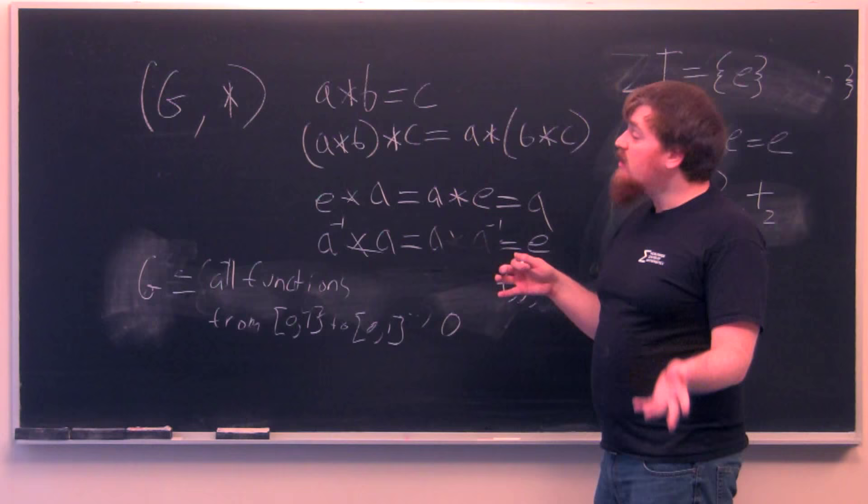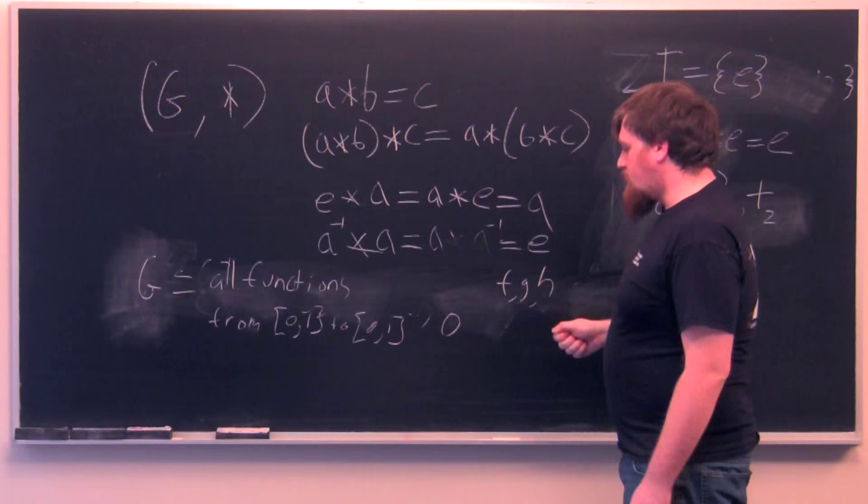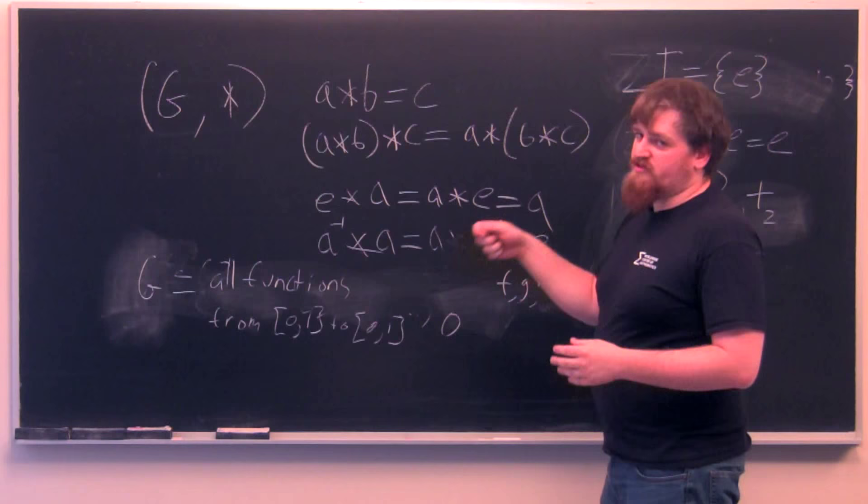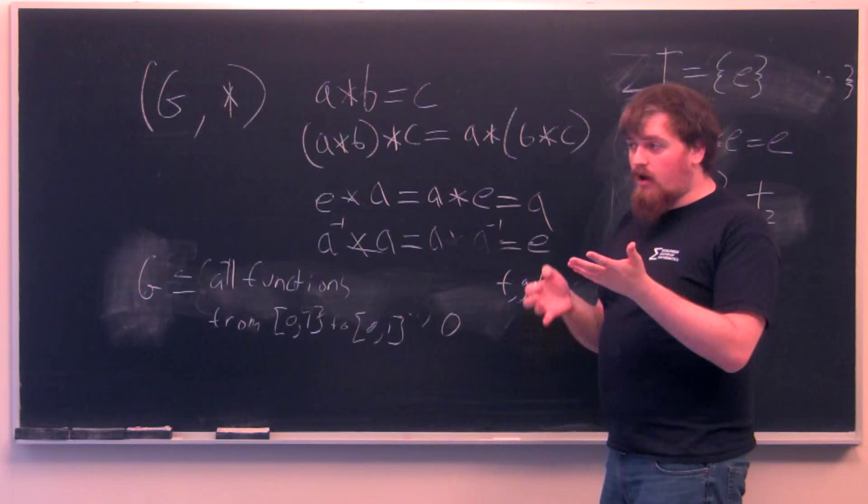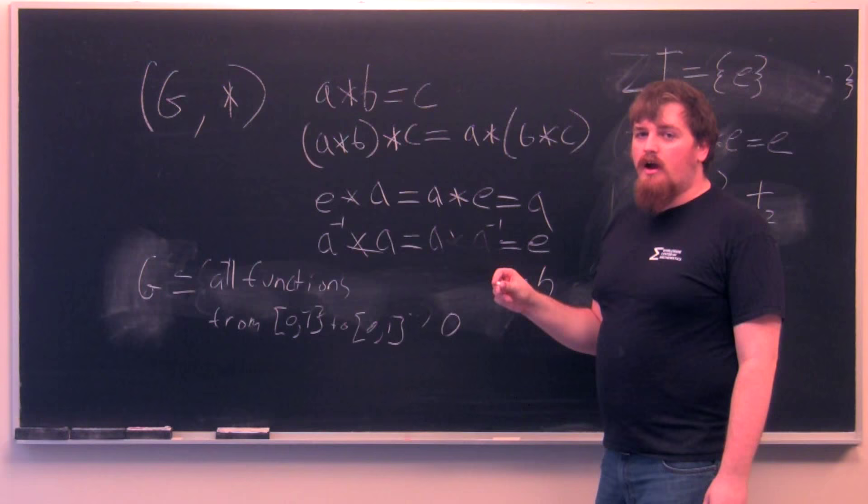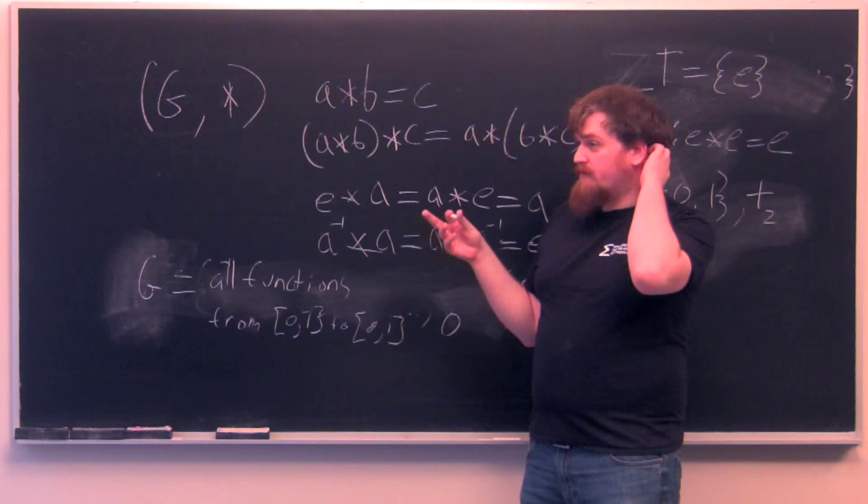Composition of functions is associative in that F of G of H is the same thing as F of G of H. It's just all a big stack. The identity function, which sends every element to itself, when composed on either side with a function, sends that function back to itself.